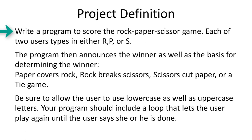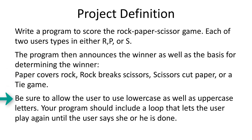The project definition states: write a program to score the rock-paper-scissors game. Each of the two users types in either R, P, or S. The program then announces the winner as well as the basis for determining the winner: paper covers rock, rock breaks scissors, scissors cut paper, or tie game. Be sure to allow the user to use lowercase as well as uppercase letters. Your program should include a loop that lets the user play again until the user says she or he is done.